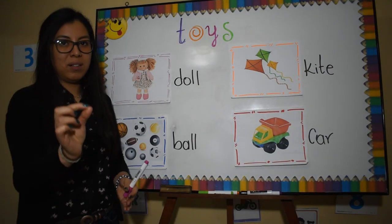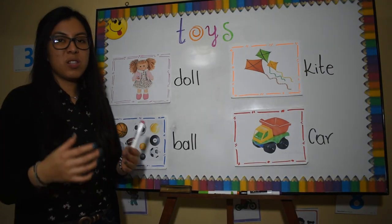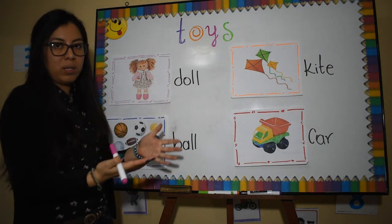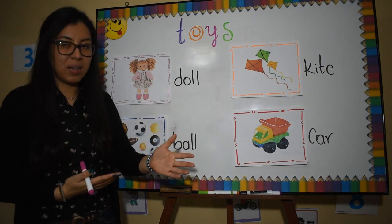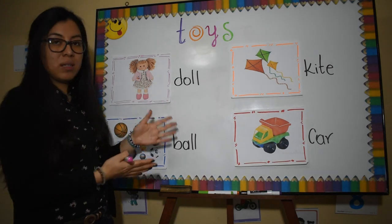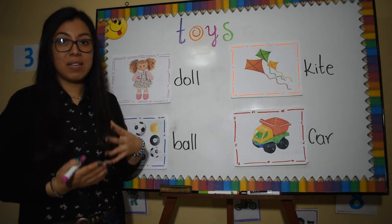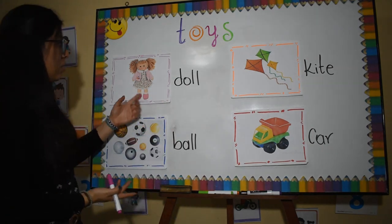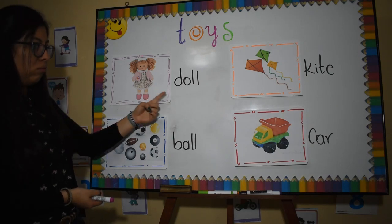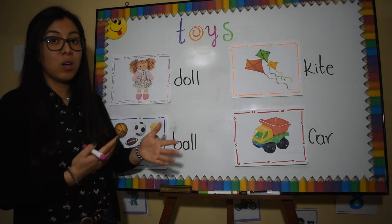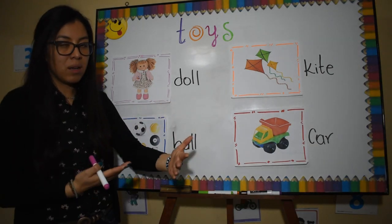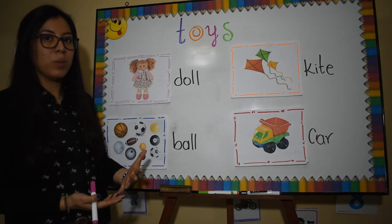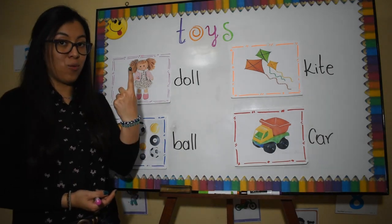Now we are going to do a little exercise. Vamos a hacer un pequeño ejercicio. We are going to see which words go with the S at the end. Vamos a ver cuáles palabras llevan la S al final para decir que son plurales. Entonces tenemos acá doll. ¿Va con S? No, porque es singular. Estamos hablando de una sola.